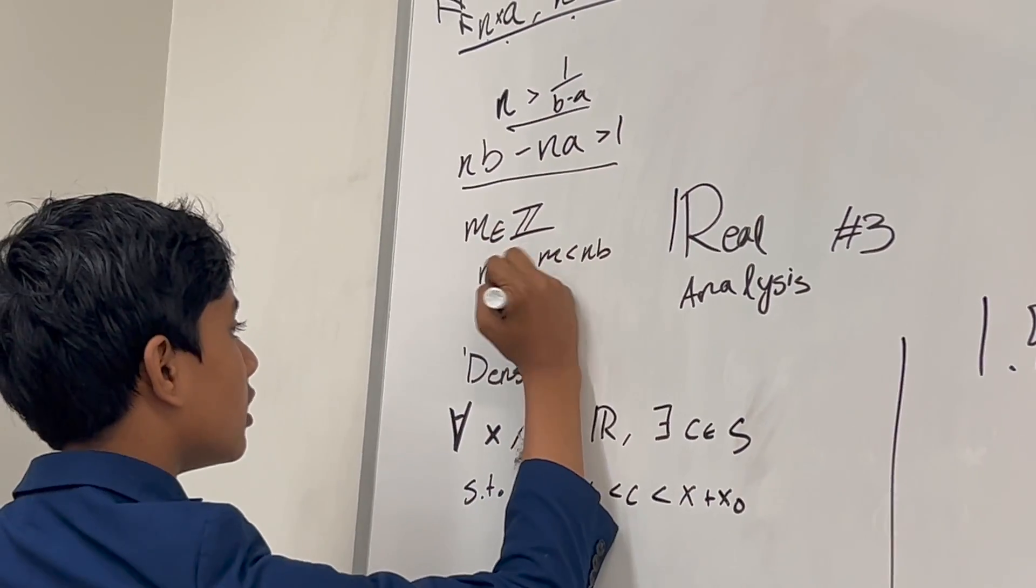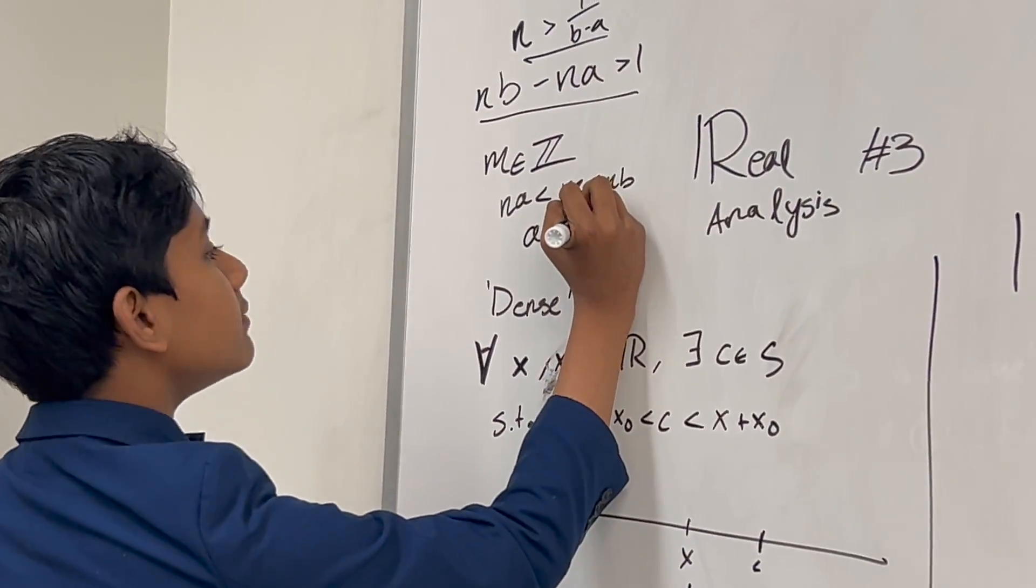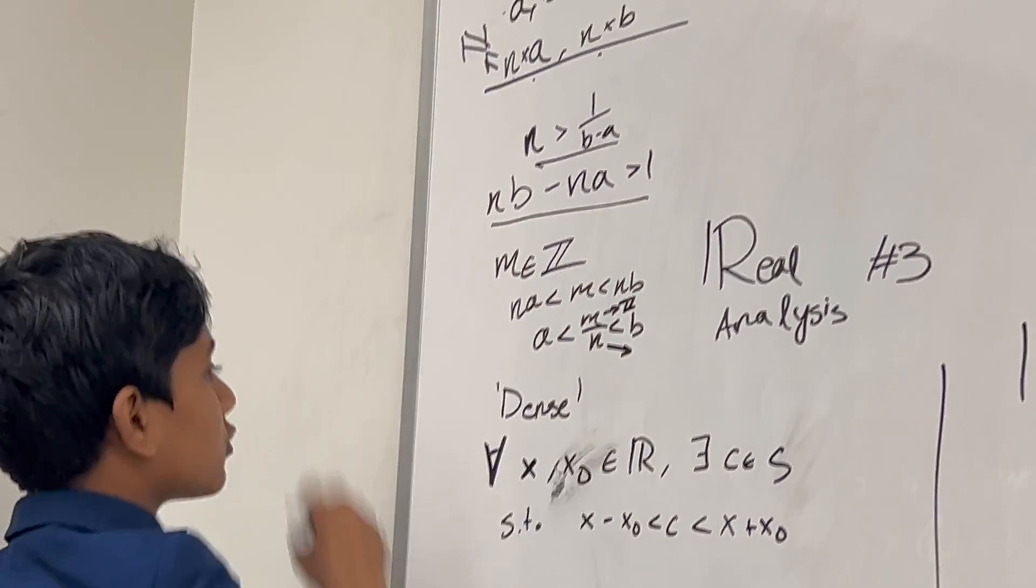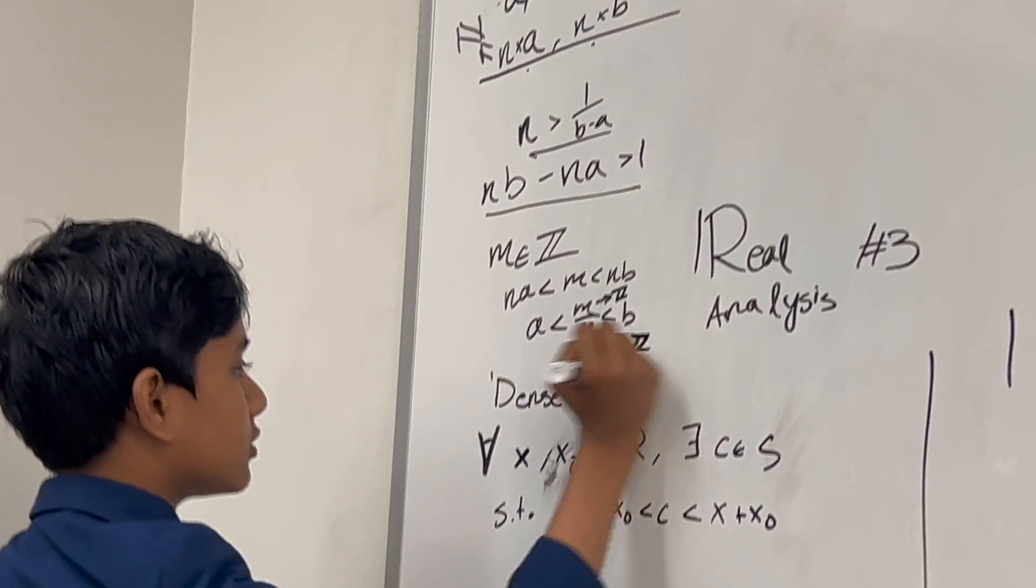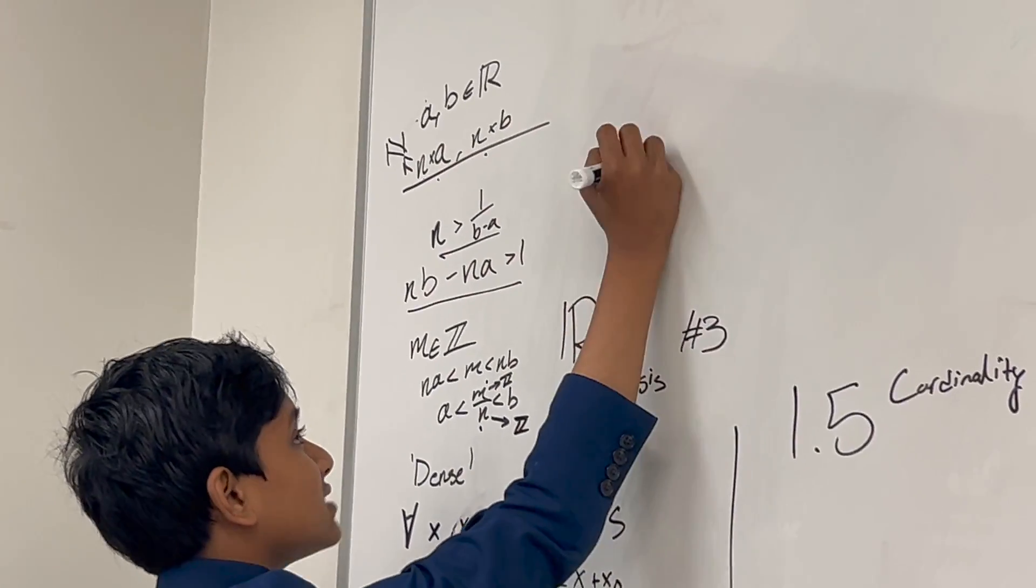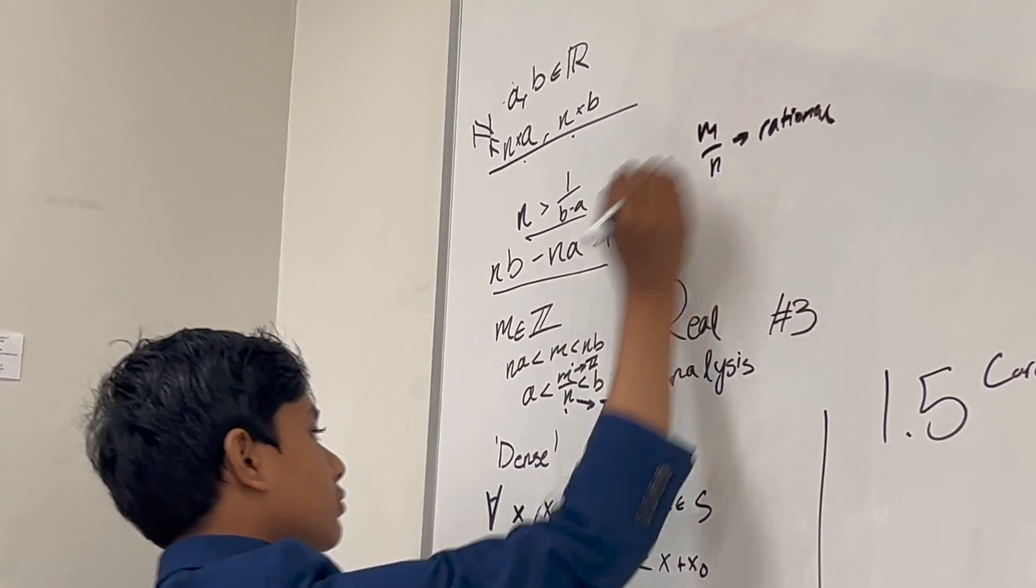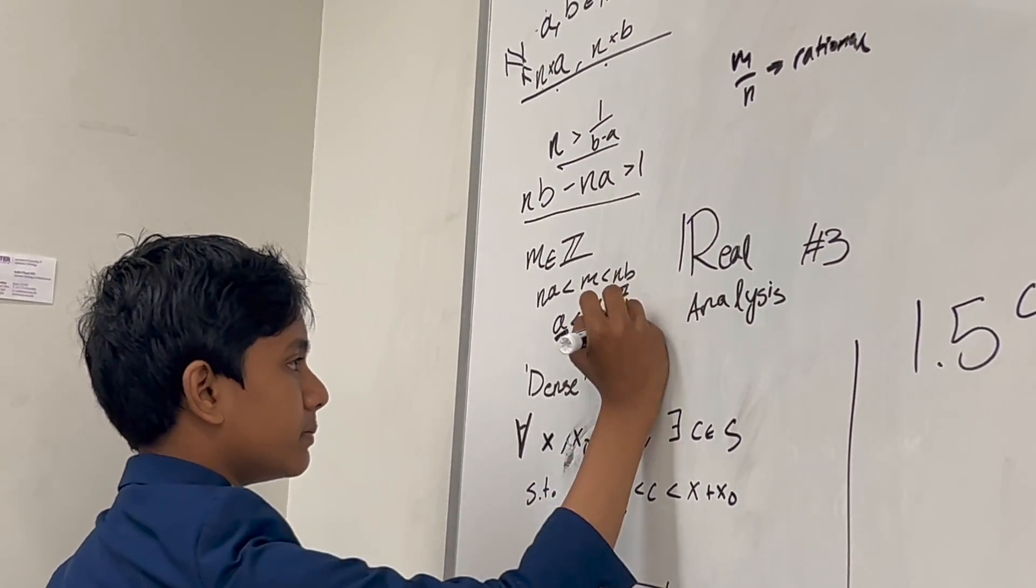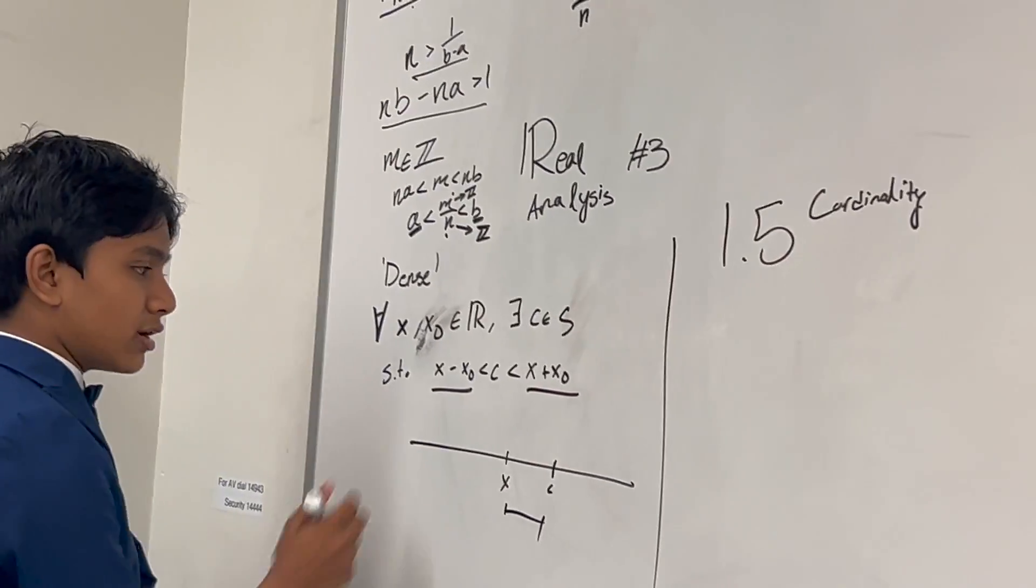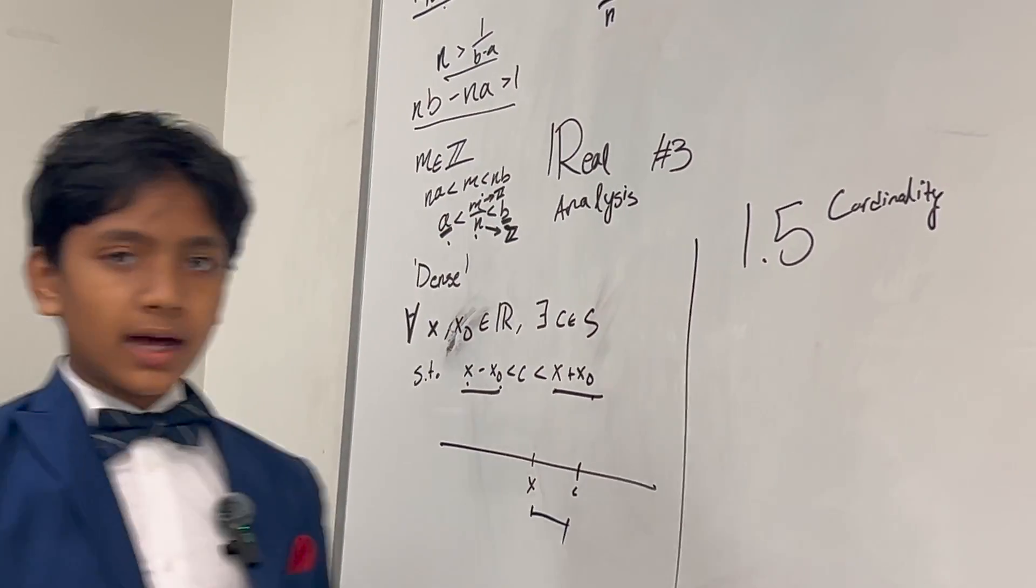Why do we want this to be greater than 1? So, we can find at least one integer in it. We're going to call the smallest integer in this interval, m. Such that, na is less than m is less than nb. Then, once we divide both sides by n, we get a is less than m over n is less than b. m is in the integers, and n is in the natural numbers, which are a subset of the integers. So, since it's an integer divided by an integer, m over n is rational. So, all we have to do is replace a with x minus x naught, and b with x plus x naught. And that's not that hard, because x and x naught are two arbitrary numbers, just like a and b. So, yeah, that's that.